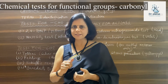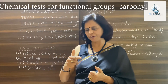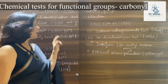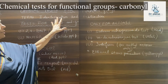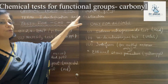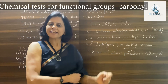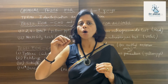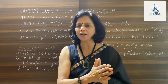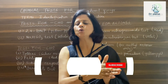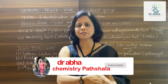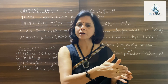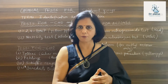There are two important terms: test for identification and test for distinction. Test for identification is a test where you have been given a compound — say you know it's a carboxylic acid — and you have to confirm that it is indeed a carboxylic acid.